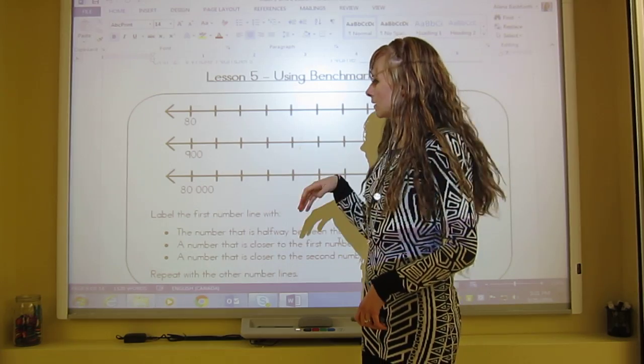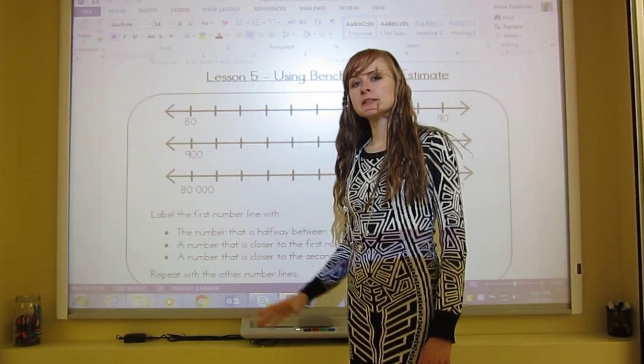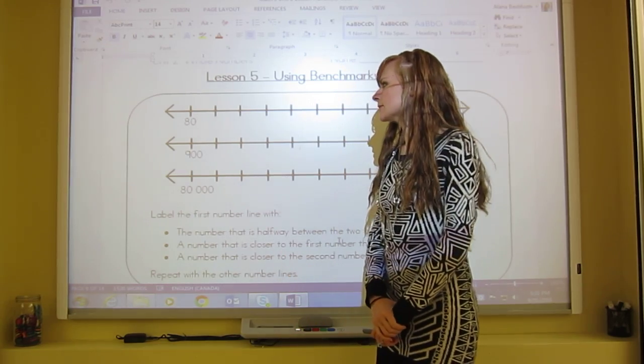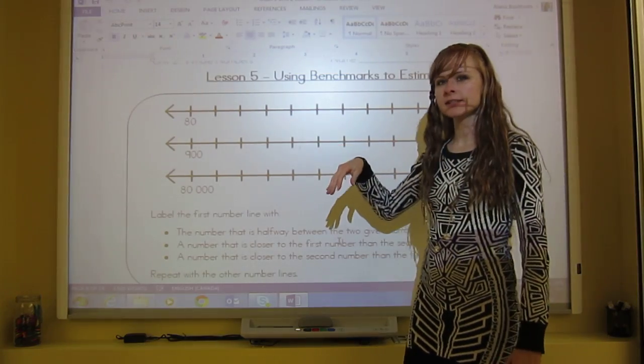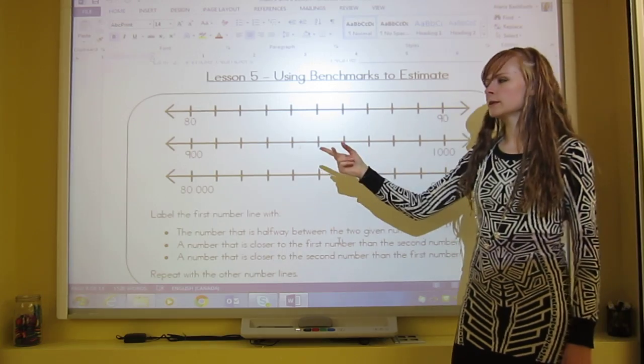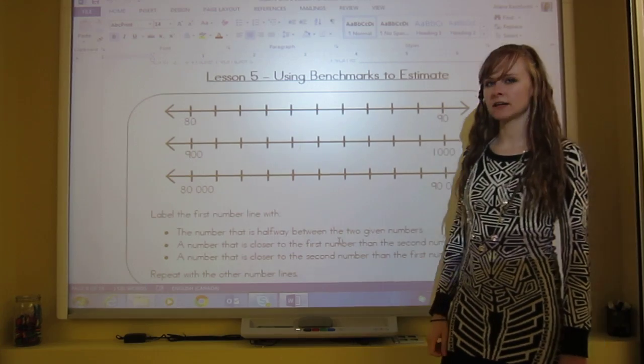Before we get started, we're going to do this activity. I'm going to read the instructions and then you're going to pause the video and try it on your own. We're going to be using these three number lines. We've got this top one that goes from 80 to 90, the middle one goes from 900 to 1000, and the bottom one goes from 80,000 to 90,000.